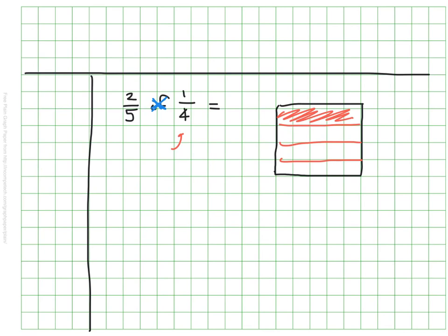Then I want two-fifths of that so I'm going to break this into fifths in the other direction. And my numerator here is a two so I'm going to go ahead and shade in two of those. Now remember what we're looking for in the brownie pan model and that is where the shading overlaps. In this case that's right here, right?